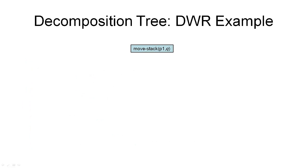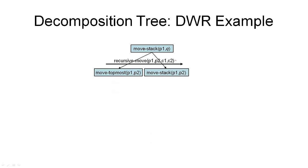Here is an example from the DWR domain to illustrate this algorithm. We start with the task of moving the stack currently in pile P1 to another stack Q, where Q is a variable and unspecified. The algorithm takes the first task in the sequence and tests whether it is primitive or non-primitive. In this case it is non-primitive, so we compute the set of all relevant and applicable methods and choose one. I'm choosing the recursive move-from-pile-one-to-pile-two method, moving container one from container two as the first part. Applying this method decomposes the first task into two new subtasks: moving the topmost container from pile one to pile two, and moving the stack from pile one to pile two recursively. Note that P2 is instantiated in this method and in the subtasks as well.